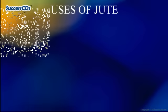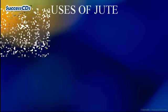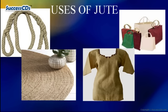Another natural and one of the cheapest fibers is jute. This fiber is widely used as packaging material and for making ropes, bags and clothing.